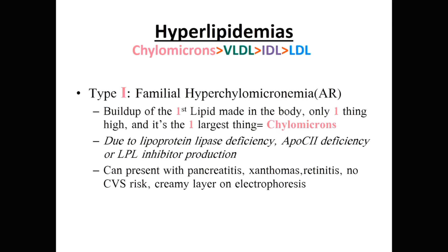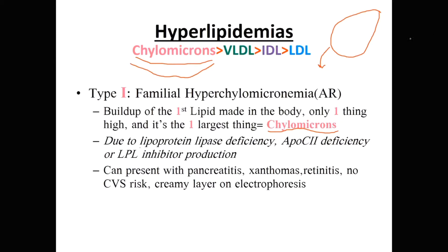The first and largest lipoprotein in our order is chylomicrons, and that is the only thing elevated in type one — high chylomicrons. This is due to lipoprotein lipase deficiency. Chylomicrons are too large to be absorbed by liver cells and need to be made smaller via lipoprotein lipase activation by ApoC2. If the enzyme is deficient, or if there's an inhibitor, chylomicrons cannot be converted to remnants, so chylomicrons remain elevated.